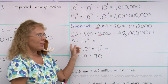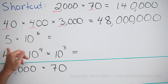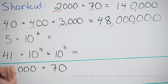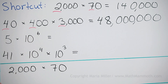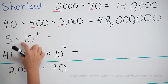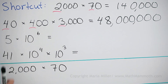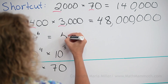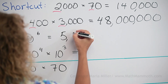How about 5 times 10 to the sixth power? 10 to the sixth power is 1 followed by 6 zeros — that number is 1 million. So we get 5 million: 5 followed by 6 zeros.